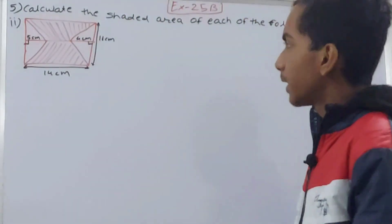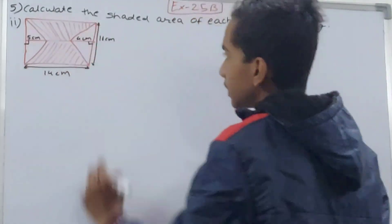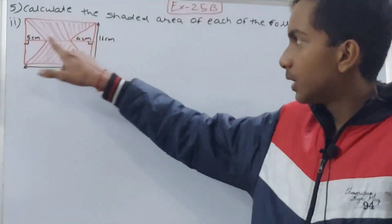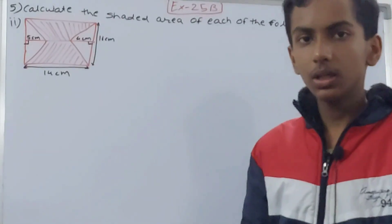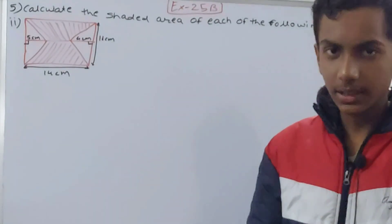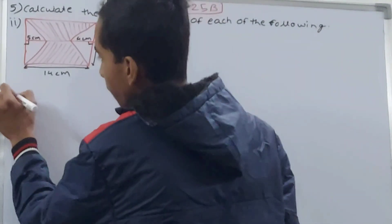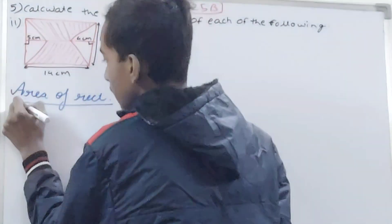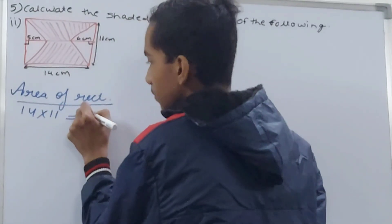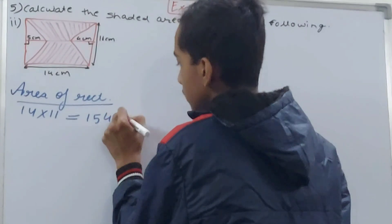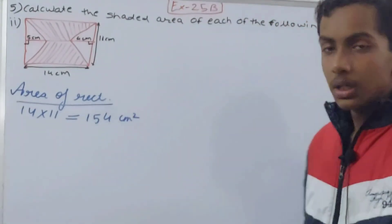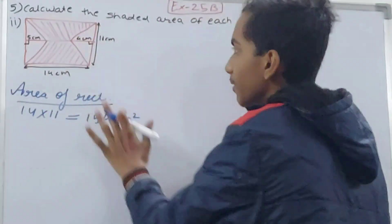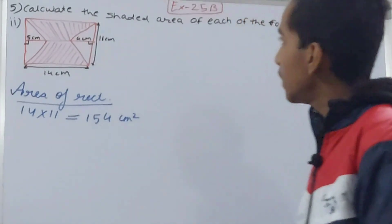Now the next part. It is again a rectangle — one side is 14 centimeters and the other side is 11 centimeters. We again have two unshaded triangles on both sides, so we will subtract their areas from the rectangle's area. Area of rectangle = 14 × 11 = 154 square centimeters.